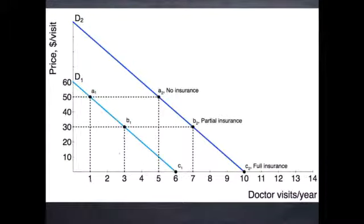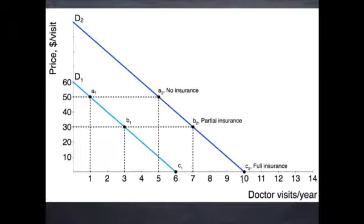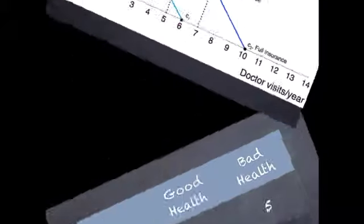The same pattern holds under his demand for poor health, looking at points A2, B2, and C2. When he is in poor health with no insurance, he visits the doctor five times. With partial insurance in poor health, he visits seven times. And with full insurance in poor health, he goes to the doctor ten times a year — doubling his utilization. So the presence of insurance increases utilization, and the degree of insurance, with full insurance having the greatest impact, is exactly the moral hazard issue we're talking about.